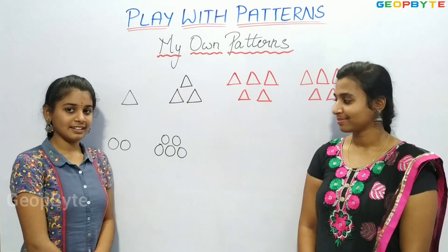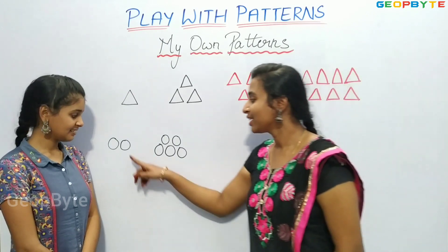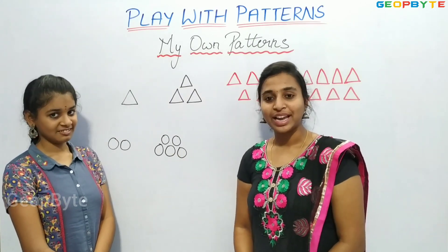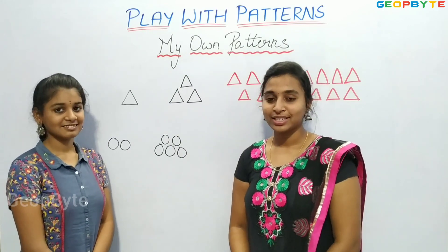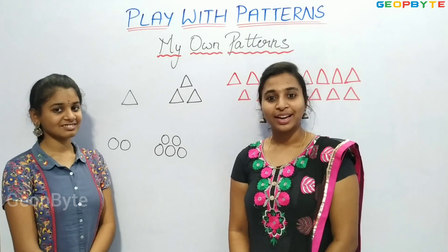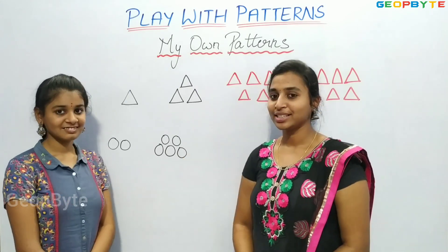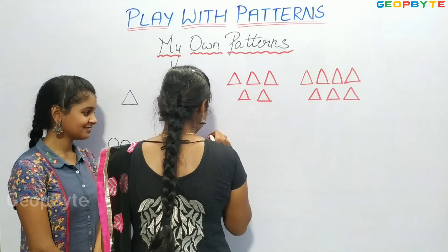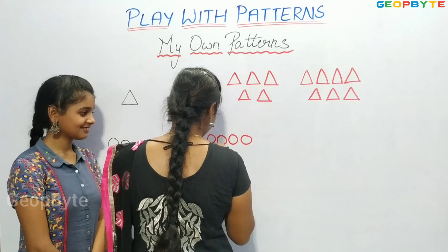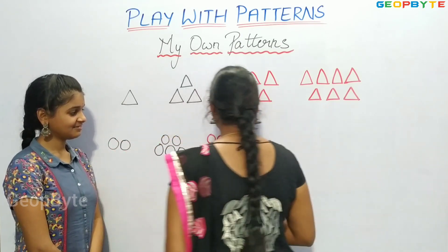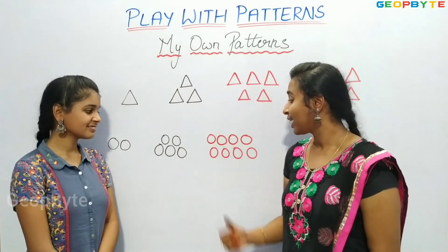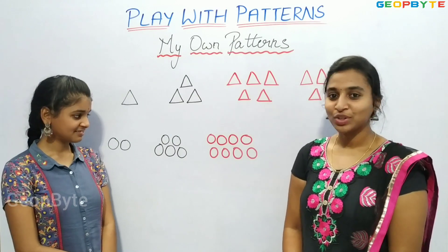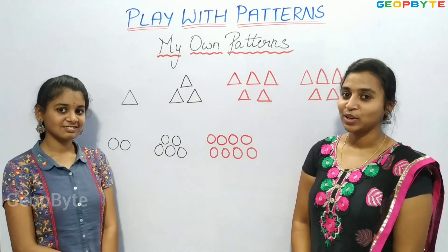Now my friend will extend the pattern. Children, if you see, we have two circles here. Again, we have five circles here. That means we added three circles to two circles and got five circles. Now let us add three more circles to five circles and we will get eight circles. Let us draw. As we got eight circles by adding three circles to five circles, now let us add three more circles to eight circles and draw eleven circles.